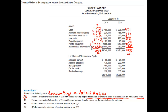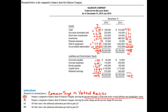If I do the same thing for liabilities and shareholders' equity — remember, liabilities and shareholders' equity is going to be 100% in both cases — in 2015, I find that accounts payable is 1.5%, accrued expenses is 5.09%, bonds payable is 13.47%, capital stock is 62.87%, and retained earnings is 17.07%. So that's the mix of liabilities and shareholders' equity.